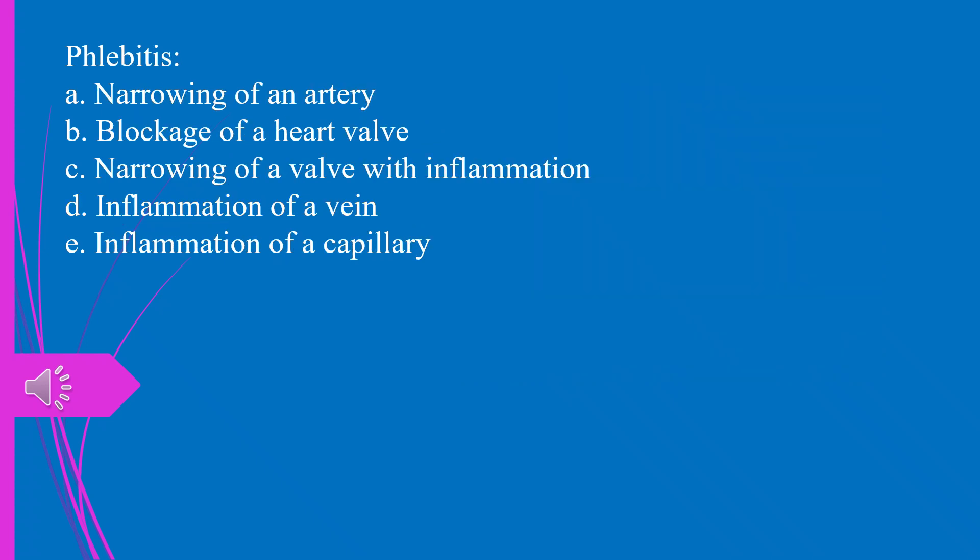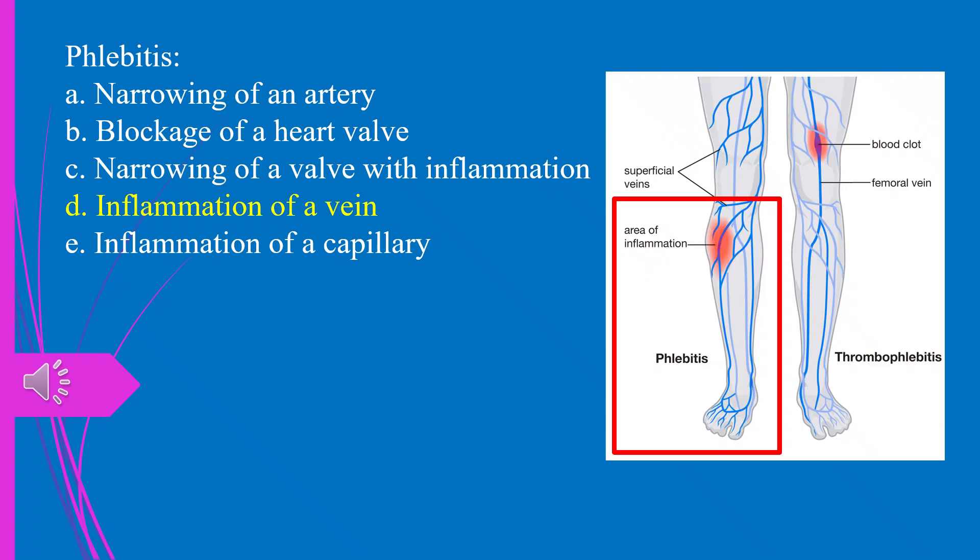Question 20. Phlebitis means: a) narrowing of an artery, b) blockage of a heart valve, c) narrowing of a valve with inflammation, d) inflammation of a vein, e) inflammation of a capillary. The answer is d, inflammation of a vein.